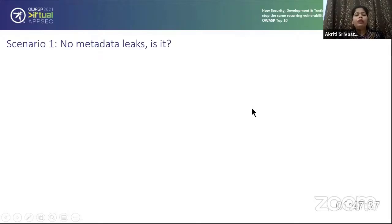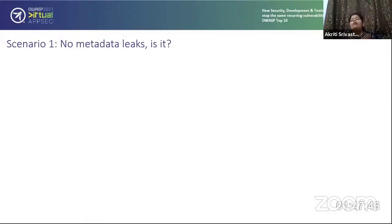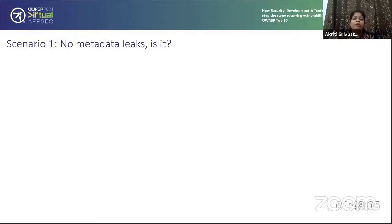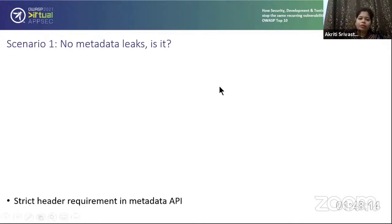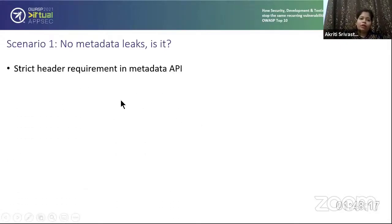Taking up scenario one: SSRF metadata leakage. The first thought that may come to mind is that Azure is not affected by metadata leakage via SSRF because they have a good policy that every time you query the metadata service, there should be a header of 'Metadata: true' — only then you get a proper response. But in this case, we were still able to get the metadata. It was not Azure's fault but insecure coding practice. There is a strict header requirement in the metadata API — and as proof, research on Jira showed metadata leakage from host is zero for Azure.